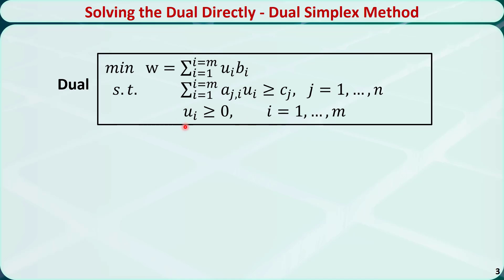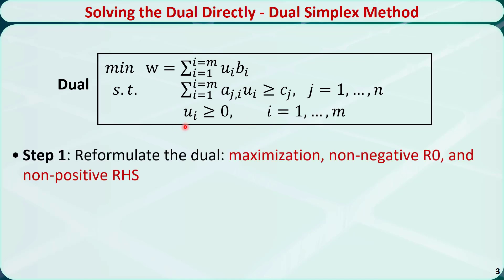The dual simplex method has three steps. In step 1, we need to reformulate the dual problem so it will be a maximization problem with non-negative row 0 and non-positive right-hand side (RHS).